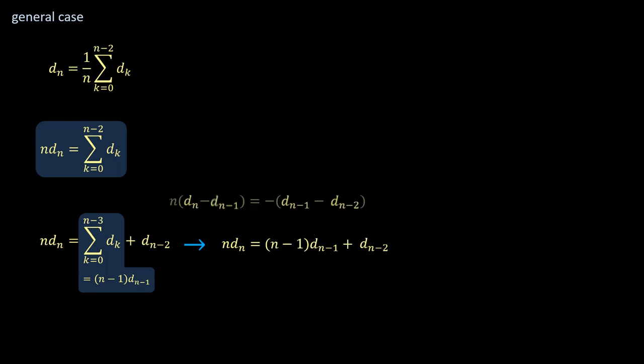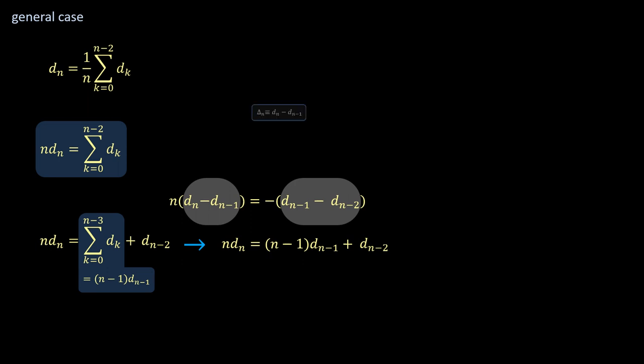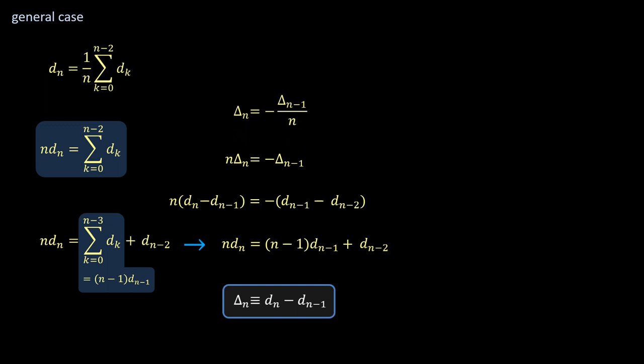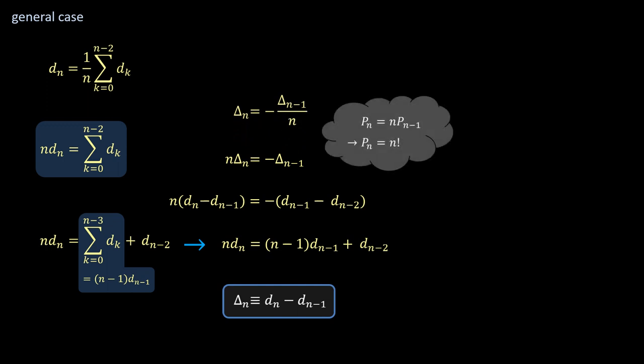To yield the following second order difference equation. This equation can be regrouped to bring out differences of consecutive d terms. Let's name this difference delta_n, by which the order of the difference equation reduces to 1.